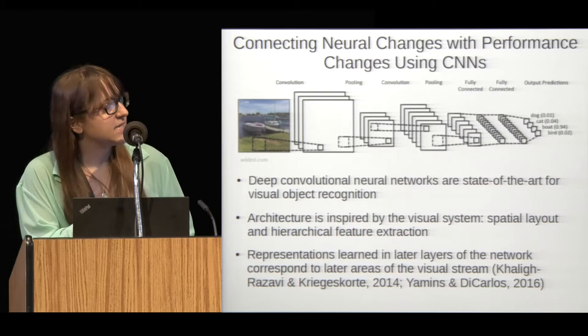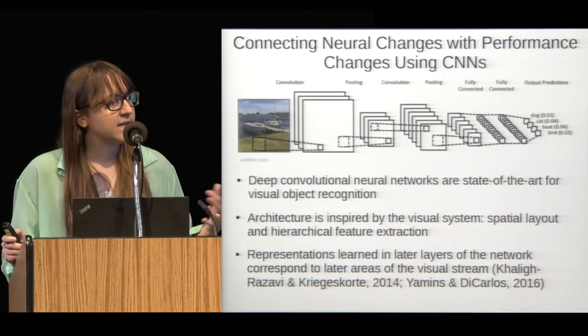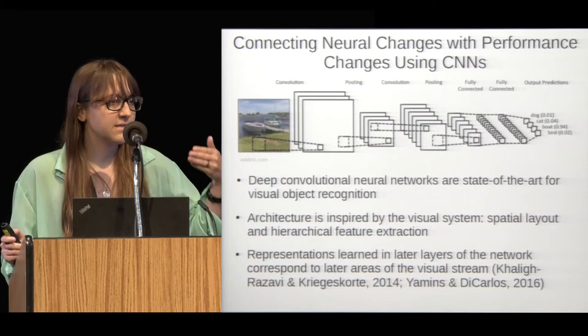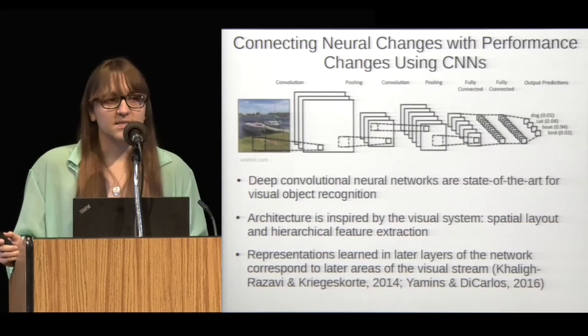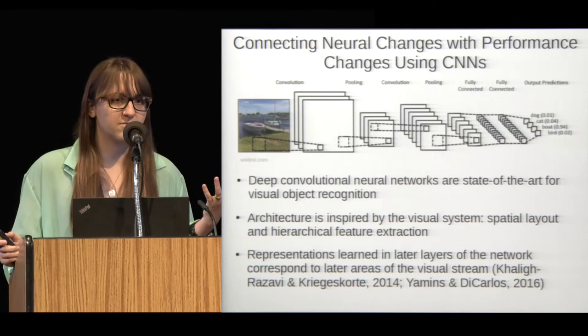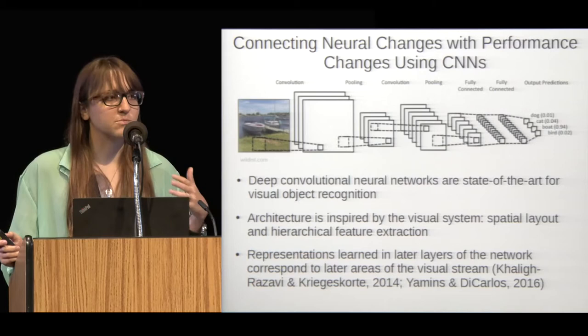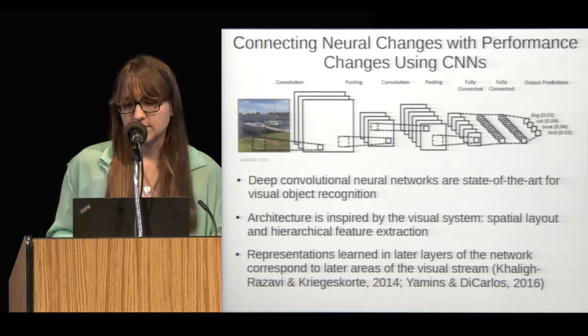Studies that have directly compared representations in these models and in the brain have found that representations are more aligned when you look at later layers in the model and later areas in the visual system. Taken together, the fact that these networks can perform complicated tasks and have neural representations reminiscent of the brain makes them a good starting point to explore the relationship between neural changes and performance changes — particularly with respect to the neural changes that come with attention.